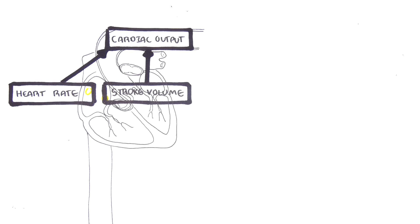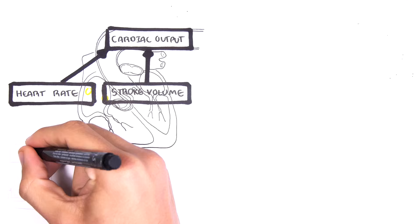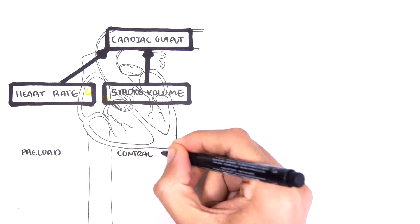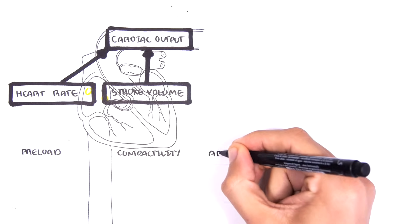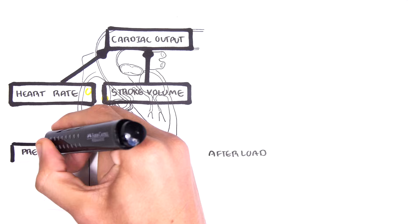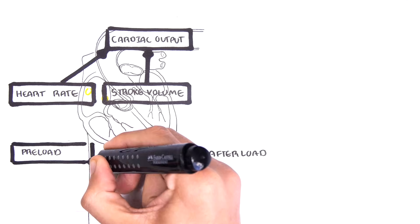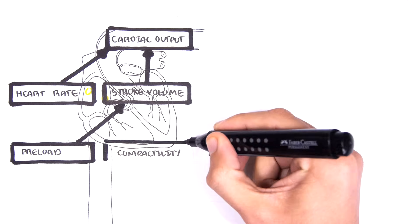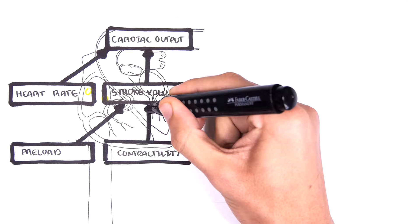There are three other things that influence your stroke volume: preload, contractility, and afterload. So in total there are four determinants of cardiac output.